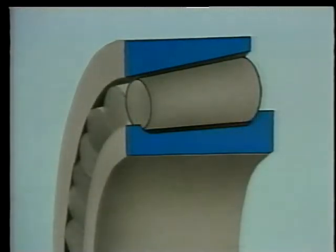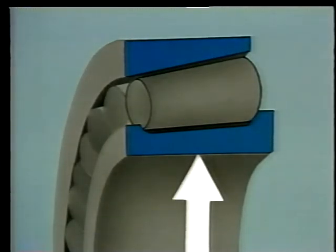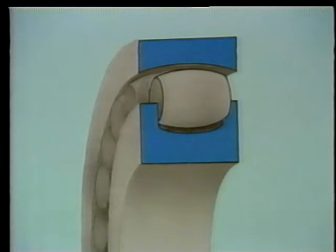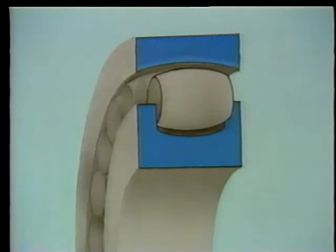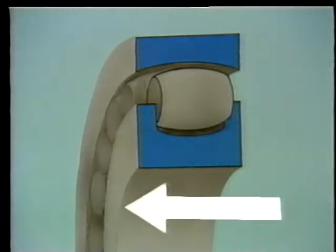The second type is the tapered roller bearing. Its rollers are smaller at one end than the other, and the races are also tapered to match the rollers. This type can handle both radial and axial loads. Another type has barrel-shaped rollers and is referred to as either a barrel roller bearing or a spherical roller bearing. Its outer race is shaped like a section of a sphere, allowing the bearing to align itself. Barrel or spherical roller bearings are intended primarily for radial loads but can also handle some axial load.